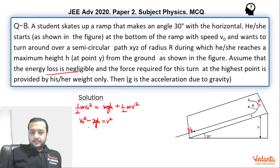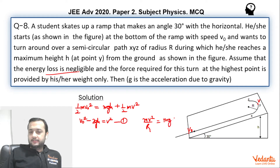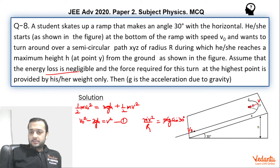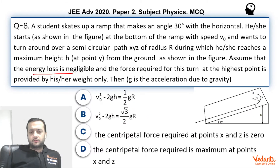We can call this equation 1. The force equation at the top point gives centripetal acceleration MV²/R, which equals Mg·sin30° because only gravity along that direction provides the centripetal force. So M cancels, giving V² = Rg/2. Substituting this value of V² into equation 1 gives us the result for option A, and hence option B was wrong.